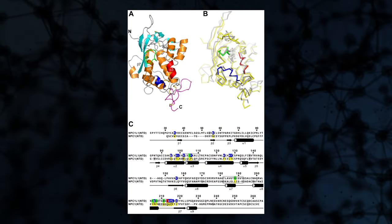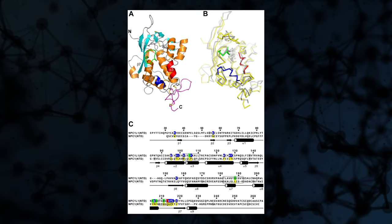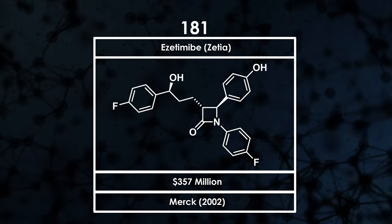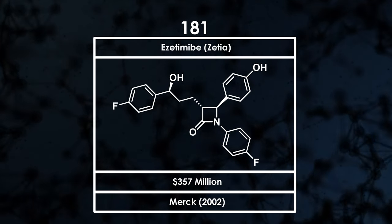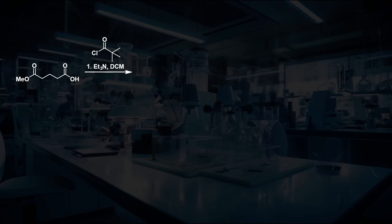It does this through inhibiting the Niemann-Pick C1-like-1 protein, which regulates the absorption of cholesterol from the small intestine. The synthesis of ezetimibe involves some of the most complex chemistry we have seen in this series so far. This carboxylic acid is reacted with pivaloyl chloride to form a mixed anhydride species, activating it for attack by this oxazolidinone.